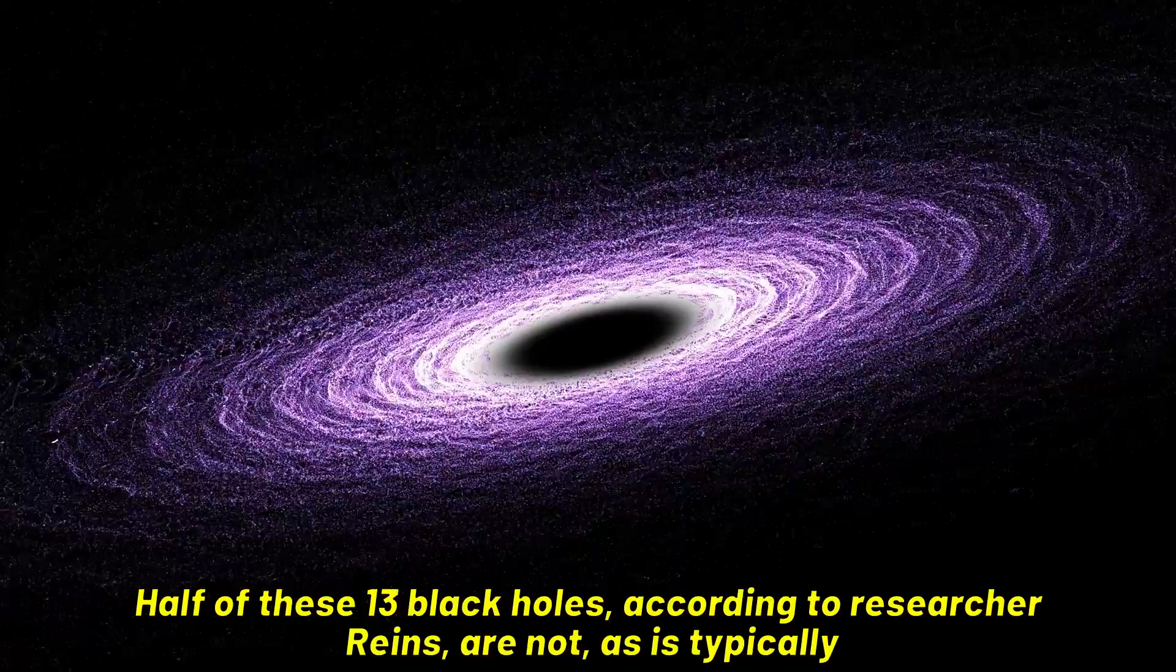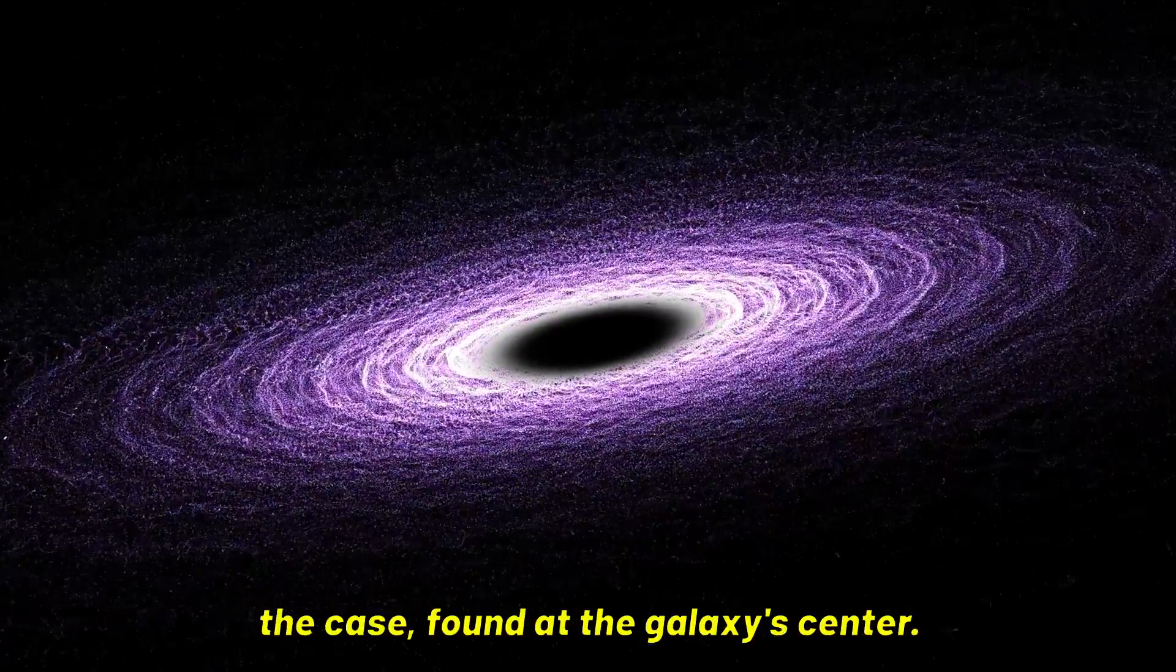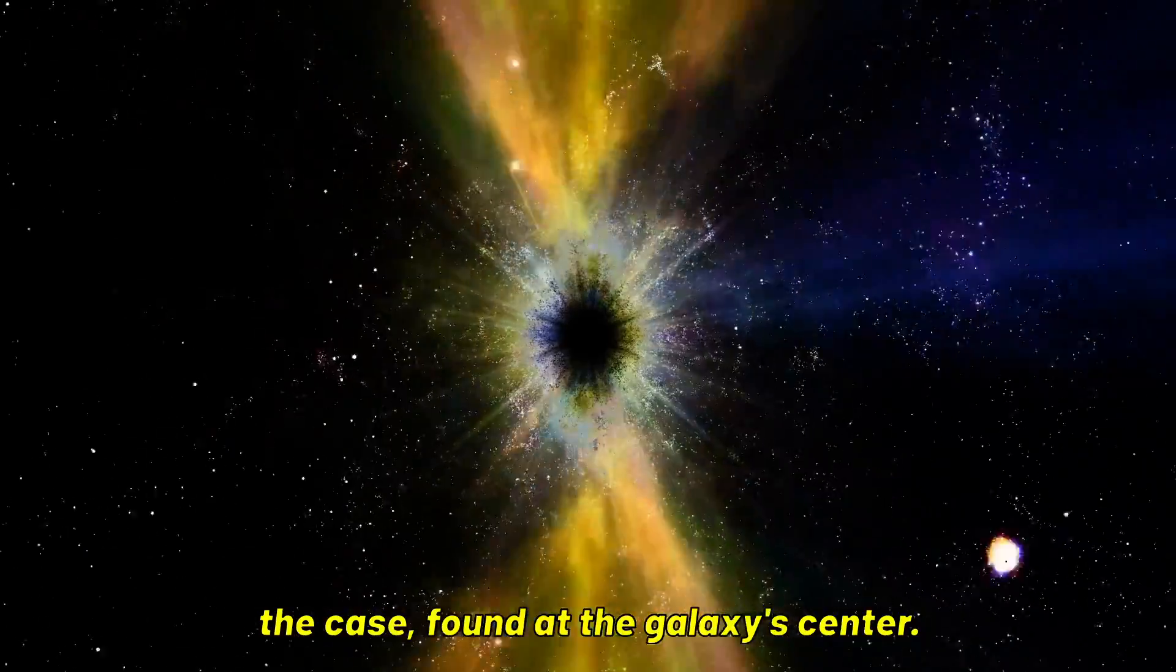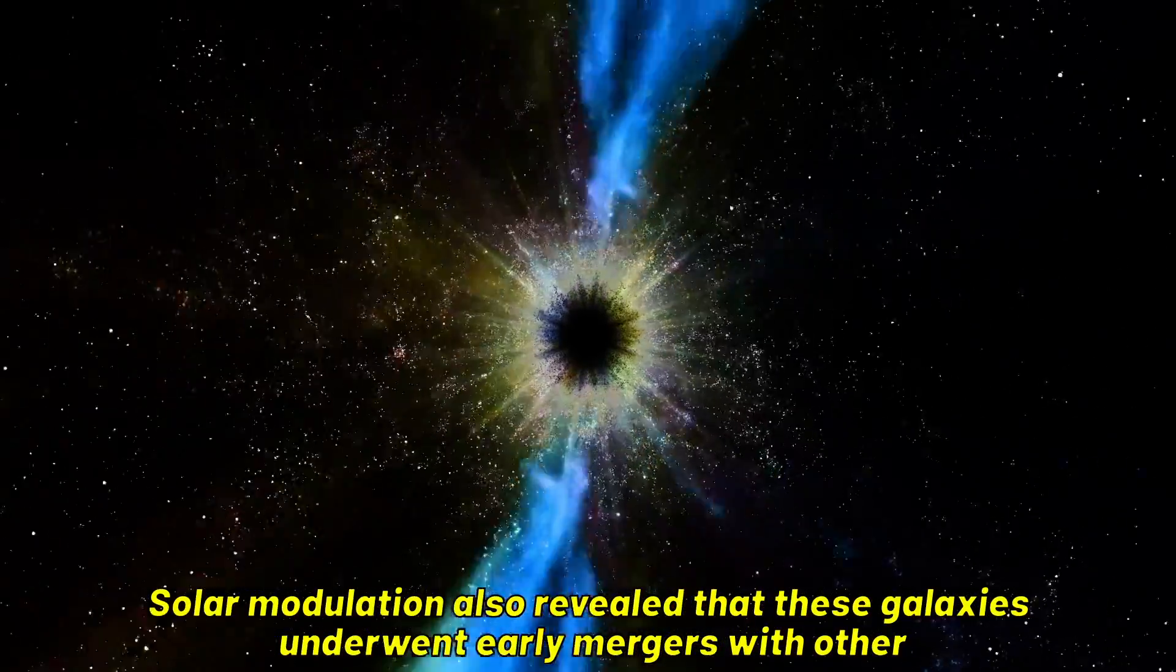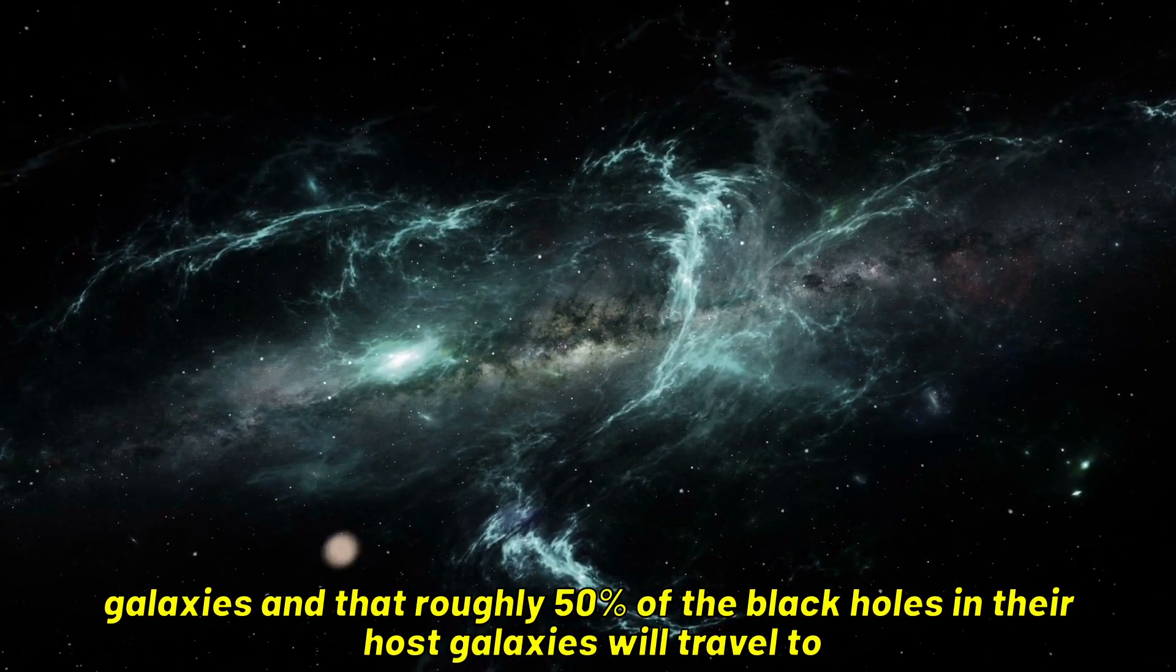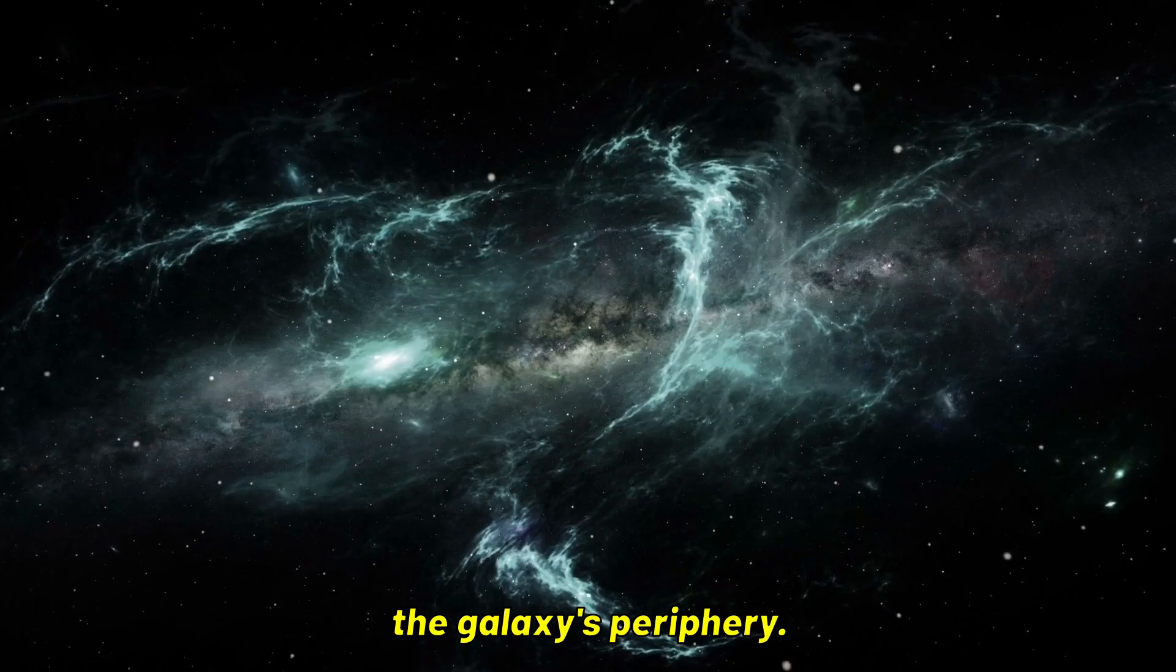Their mass on average is almost 400,000 times that of the Sun. Half of these 13 black holes, according to researcher Rains, are not, as is typically the case, found at the Galaxy Center. Computer modulation also revealed that these galaxies underwent early mergers with other galaxies, and that roughly 50% of the black holes in their host galaxies will travel to the galaxy's periphery.